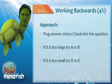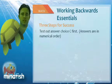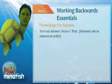So really, there's only three essential steps to working backwards. Number one, you're going to try answer choice C first. Again, most answer choices are labeled in least to greatest, so trying C will give you a good idea of where you should go from there.